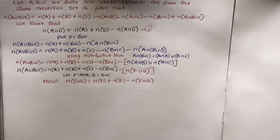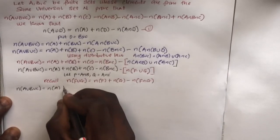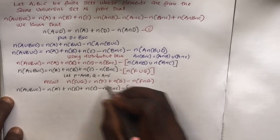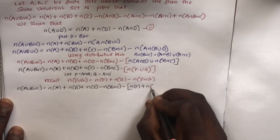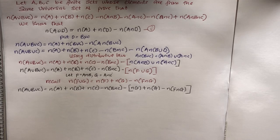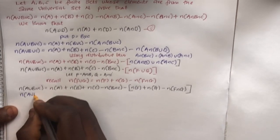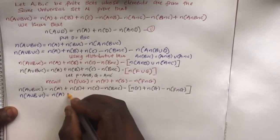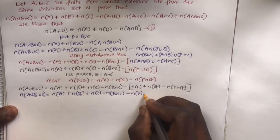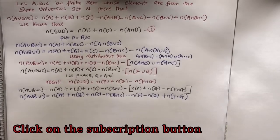Replacing everything with this, I have: cardinality of A∪B∪C equals cardinality of A plus cardinality of B plus cardinality of C minus cardinality of B∩C minus the bracket (cardinality of F plus cardinality of G minus cardinality of F∩G), with the bracket closed. The next step is to open the brackets using the subtraction sign.